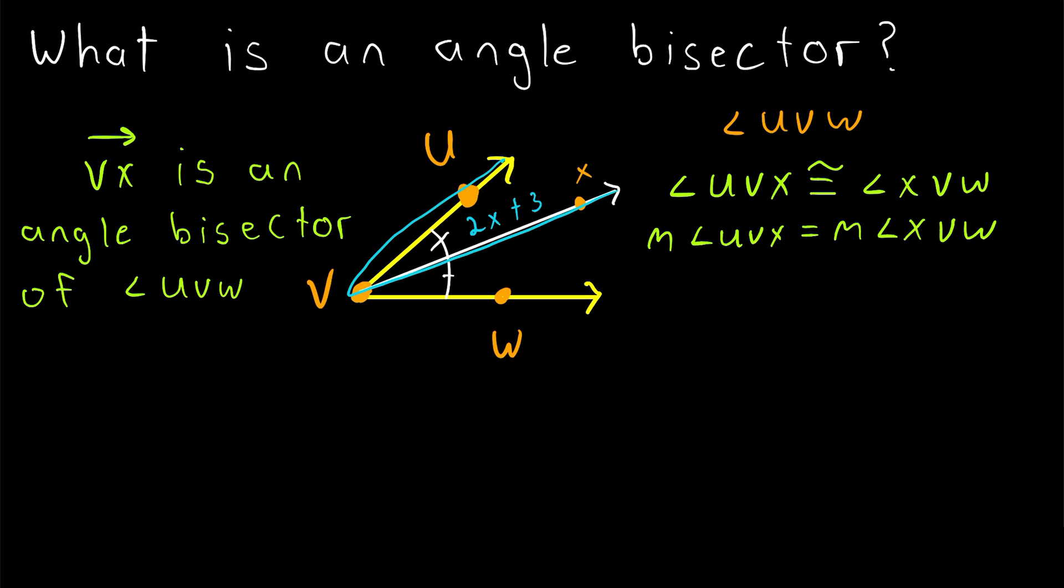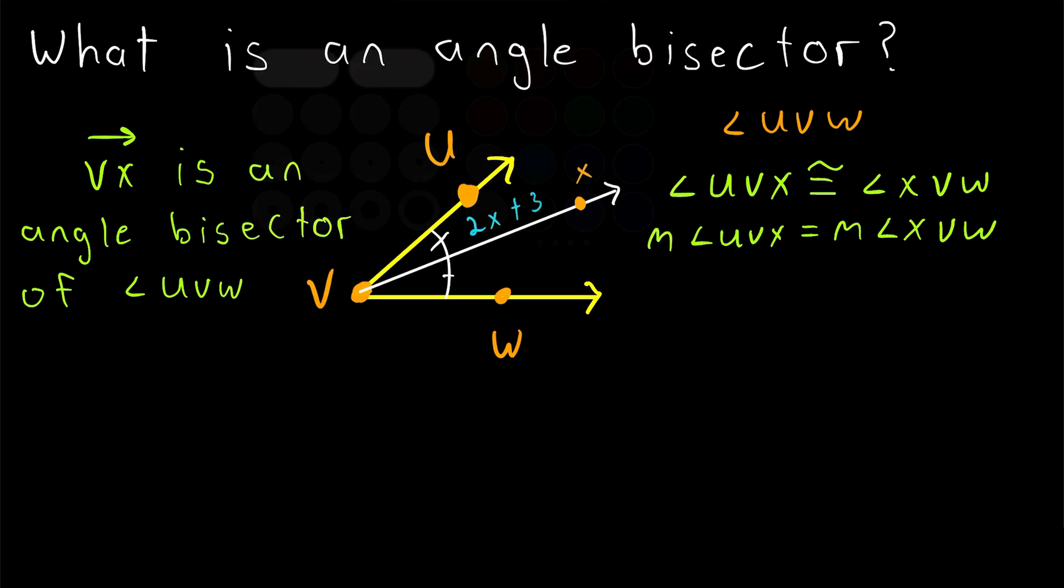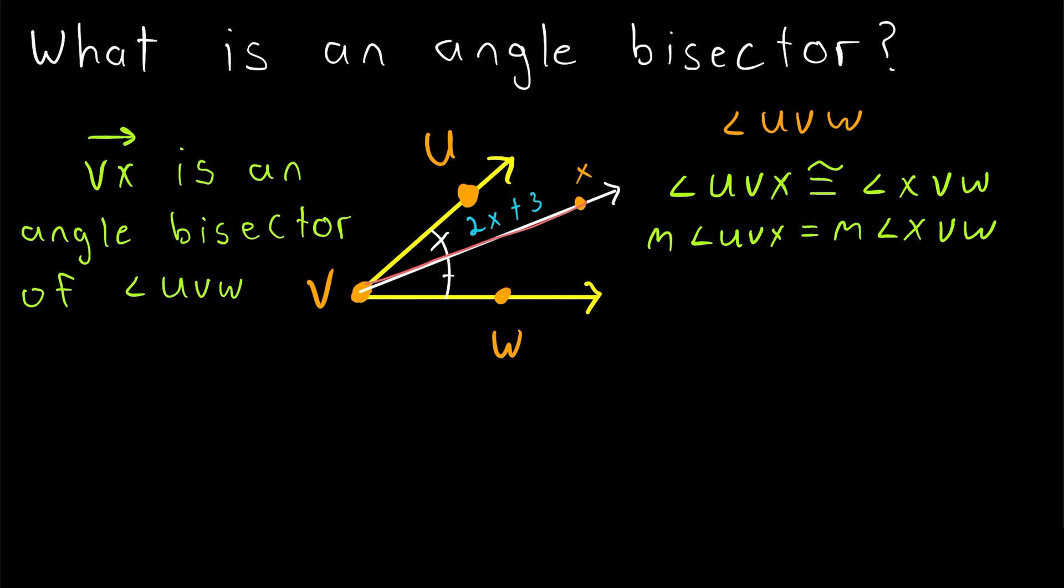So suppose this angle UVX has a measure of 2X plus 3, and suppose that the angle XVW has a measure of 3X. Then how would we go about solving for X?